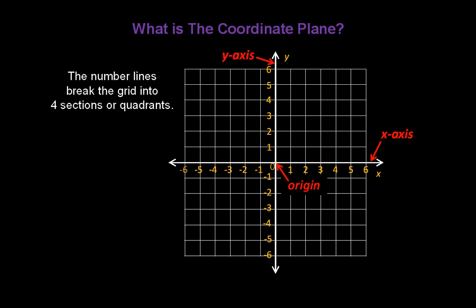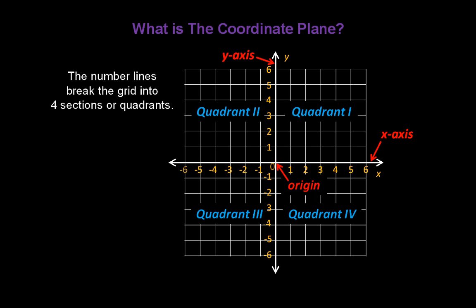The number lines break our grid into four sections or quadrants. The first one is labeled in the upper right-hand corner as quadrant 1, and we label them counterclockwise around the grid. So this is quadrant 2, quadrant 3, and quadrant 4.